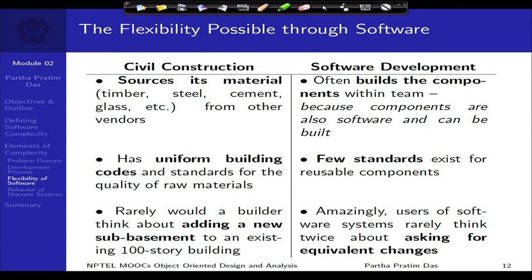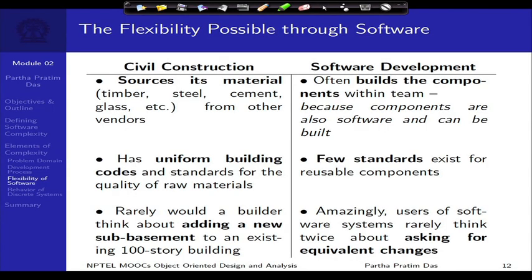The third point, which all of us know: if you have a 100-storey building, you would not even dream of going back to the builder and asking for a new sub-basement. That would be a question most people laugh at, because of the cost, the risks, and the difficulty. But in software, similar requirements are very routinely asked for. The fact that software can be changed goes severely against the software — a product can never remain stable and continue to deliver what is required. So this flexibility adds a lot of complexity to the whole process of software development.